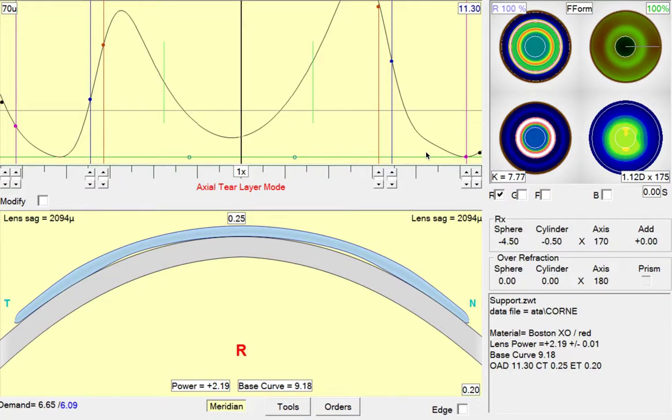In this orthokeratology case, we have a patient who's getting a good refractive endpoint, but the lens is decentering inferiorly and there's central staining on the cornea.